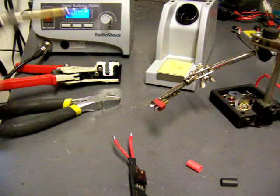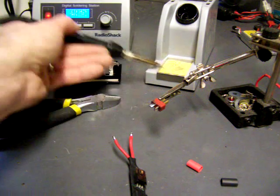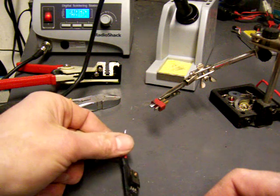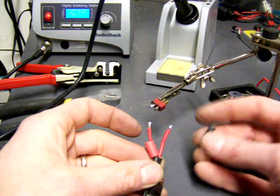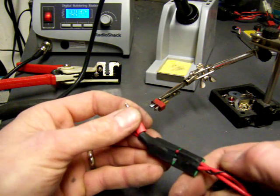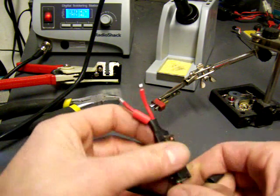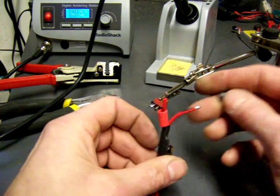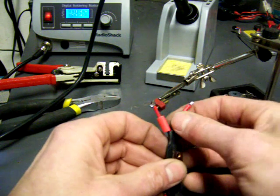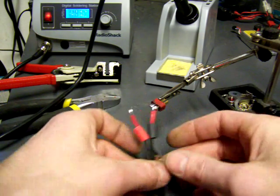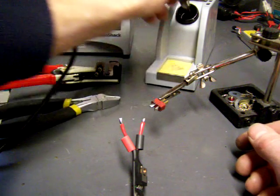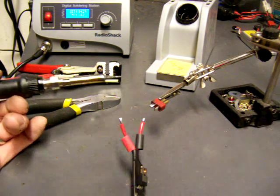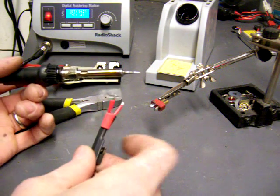There we go. Wipe the tip off. Make sure these guys are kind of cold here. I don't want to shrink them ahead of time. Now, I know this is going to be my positive here. I've got it marked. I definitely recommend one of these little third-hand tools. You can get them at Radio Shack or online for ten, twelve dollars anyways, and they're fantastic.